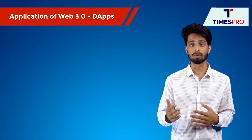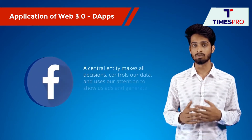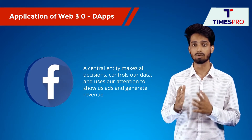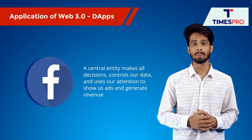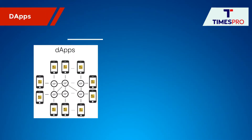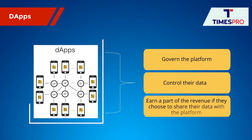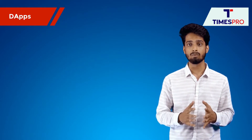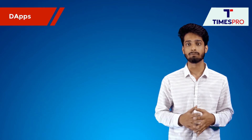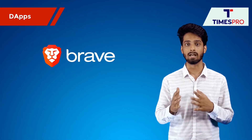Let us break that down. For instance, on a regular social media platform like Facebook, a central entity makes all decisions, controls our data and uses our attention to show us ads and generate revenue. On a social media D-app, the users of the platform get to govern the platform, control their data and earn a part of the revenue if they choose to share their data with the platform. An iteration of similar principles can be found across all other types of Web3 platforms and applications, from web browsers like Brave to blockchain-based games like Axie Infinity.